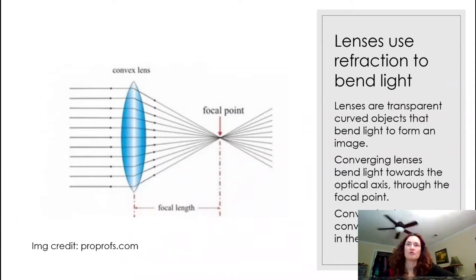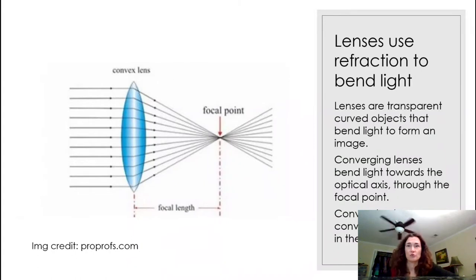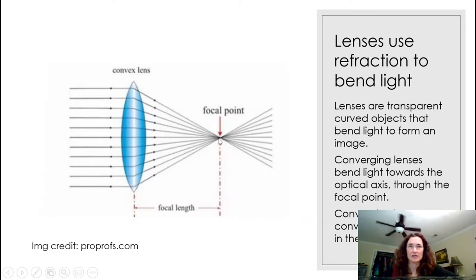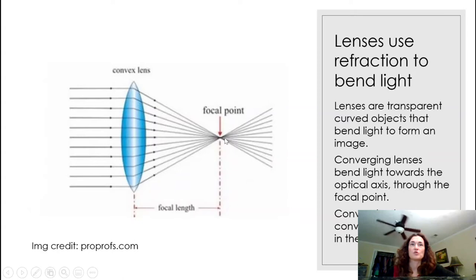There are two main types of lenses. Converging lenses bend light towards the optical axis and through the focal point. Converging lenses are convex and fatter in the middle. Parallel light rays entering the lens are refracted and bent towards a specific point — the focal point. The distance from the middle of the lens to that focal point is called the focal length.